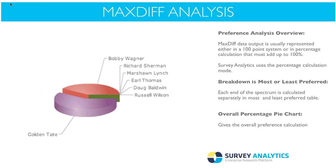The last thing shown is the overall percentage pie chart, which gives the overall percentage calculation pointing out which attribute provides the maximum difference — which attribute people either most love or hate. In this screenshot, we have Golden Tate, and it looks like he's the main one that people either love or hate. Either way, he's picked at either extreme. So that's something to consider when reviewing your max diff output.